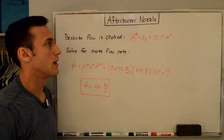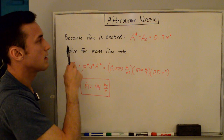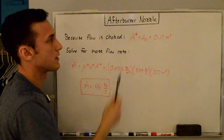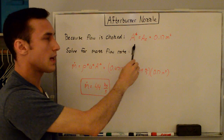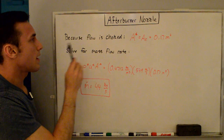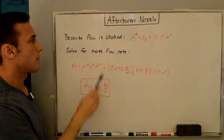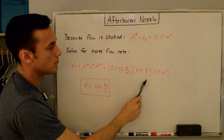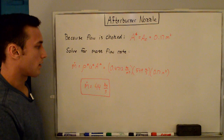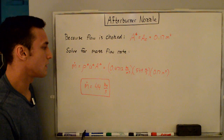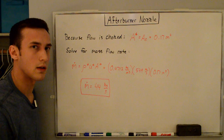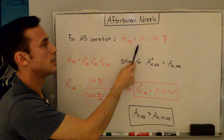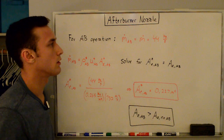The last thing we need is A*. Because the flow is choked, A* equals the actual exit area: 0.17 m². Now plugging in: M-dot = ρ* × U* × A* = 0.4712 × 549 × 0.17 = 44 kg/s. For afterburner operation, we want to maintain that same mass flow rate, so M-dot_AB = 44 kg/s.